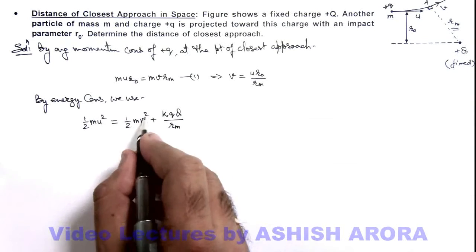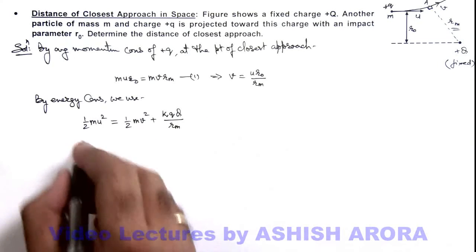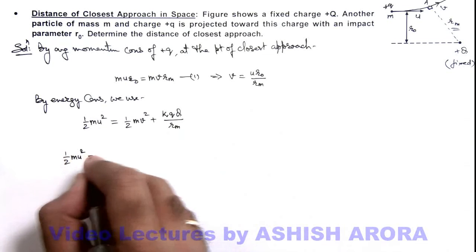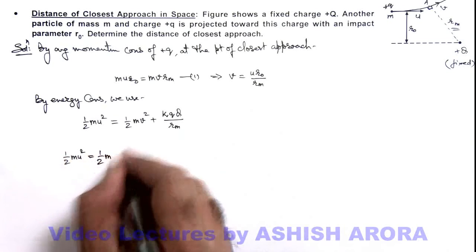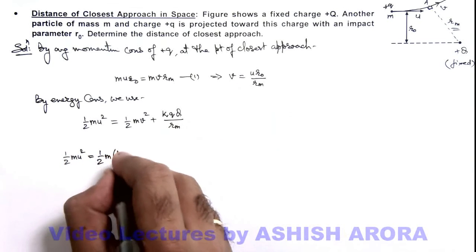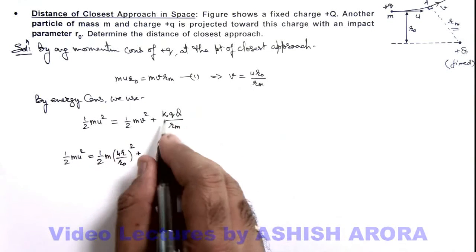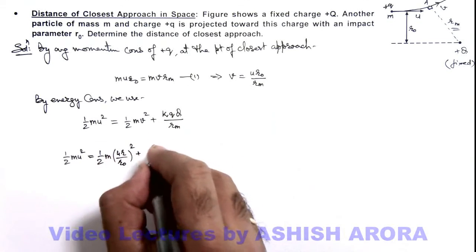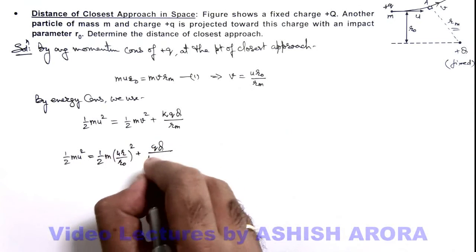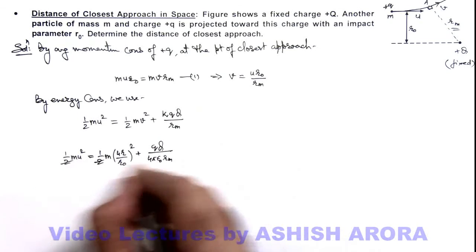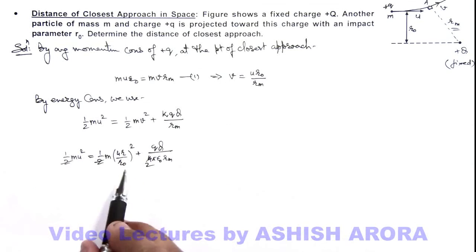In this situation if we substitute the value of speed, this will give us ½mu² = ½m(u·r₀/rₘ)² + kqQ/rₘ. Here k can be written as 1/(4πε₀), this qQ/(4πε₀·rₘ). Here I can also cancel this 2. So finally here you can see,